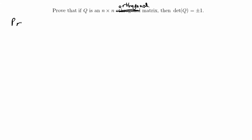Hey guys, in this video we're going to do another proof problem from my linear algebra class. This one says: prove that if Q is an n by n orthogonal matrix — I accidentally spelled orthogonal wrong — then the determinant of Q is equal to plus or minus 1.